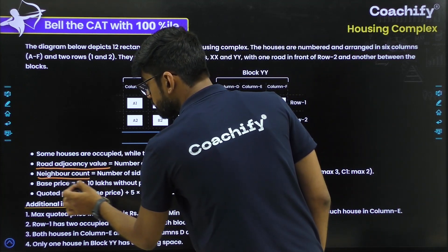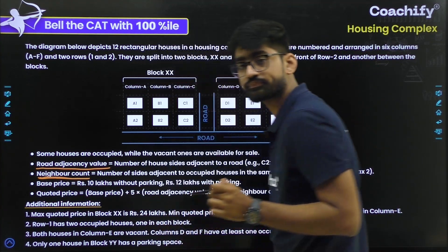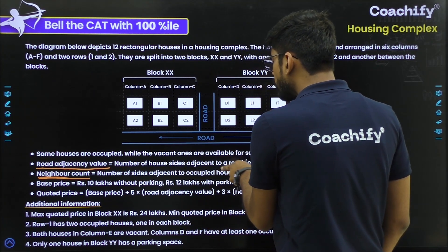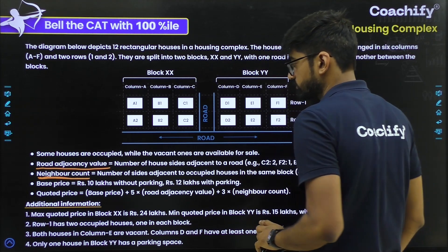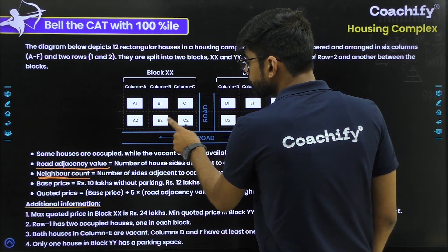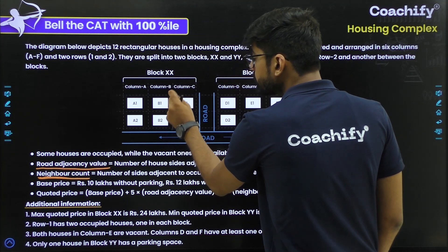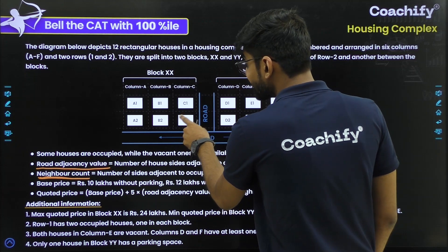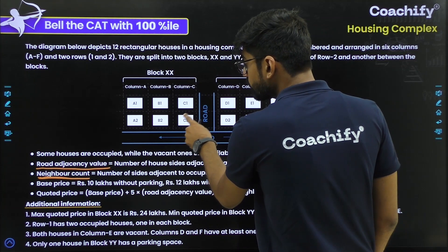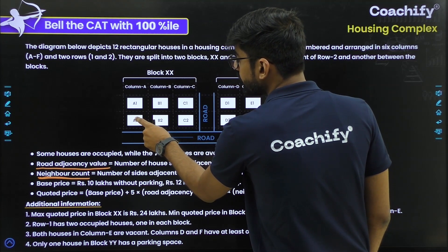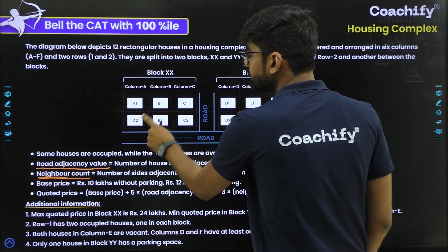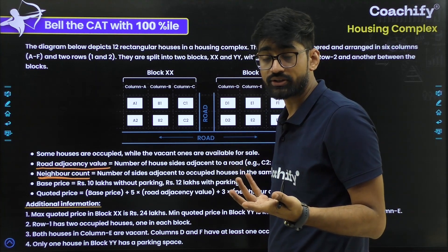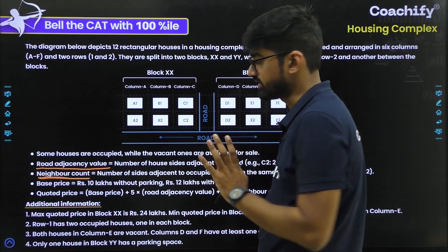Next is neighbor count. What is neighbor count? It is the number of sites adjacent to occupied houses in the same block. For example, B2's maximum neighbor count can be 3 — because house C2, B1, and A2 can all be occupied and all three are neighbors of B2. So neighbor count is simply: out of all neighboring houses, how many are occupied?